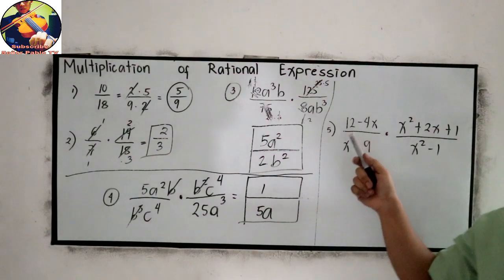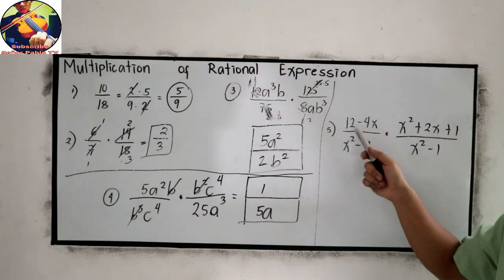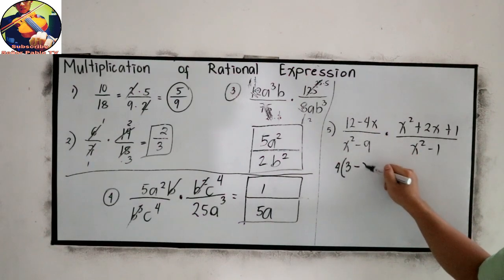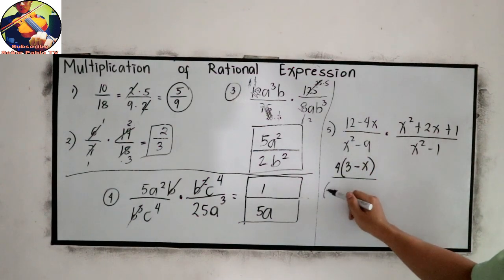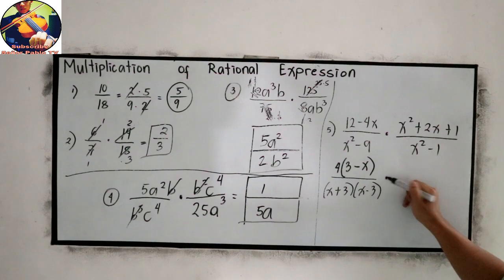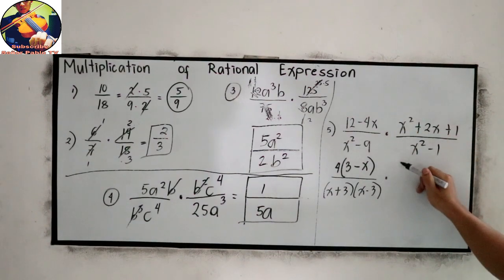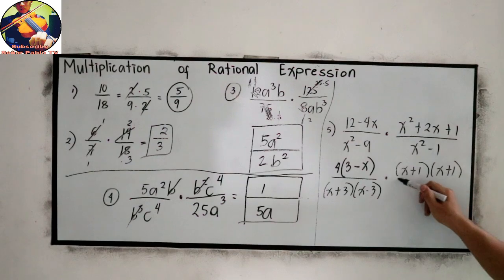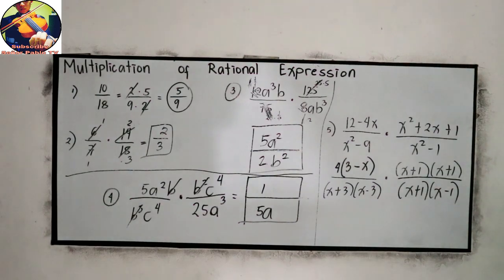In our numerator, let us factor. So the common factor is 4, so 3 minus x. And for our denominator, difference of two squares: x plus 3, x minus 3. Times general trinomial: x plus 1 times x plus 1, a perfect square trinomial. And difference of two squares: x plus 1, x minus 1.